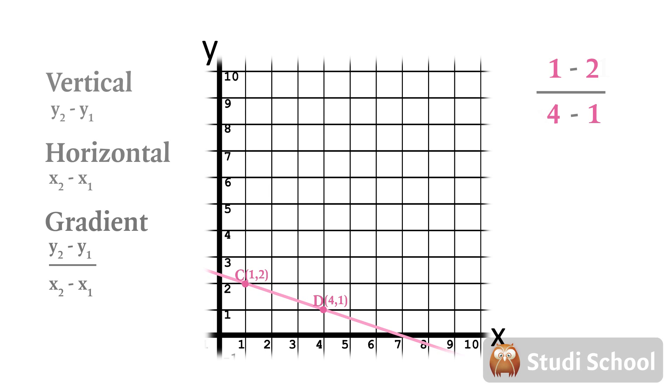1 minus 2 is minus 1 and 4 minus 1 is 3. Had both numerator and denominator been negative we would have got a positive answer. But now only one is and we get negative one third. The gradient of the line cd is a negative number and the line is sloping downwards.